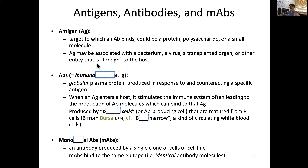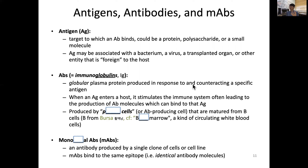Whatever entity is foreign to the host is called an antigen. The specific molecule that our immune system produces is an antibody, and its shape is related to a globular protein — that is why antibodies are also called immunoglobulins, or simply Ig. Antibodies are globular plasma proteins produced in response to and counteracting a specific antigen.